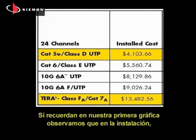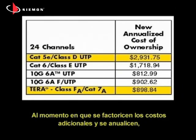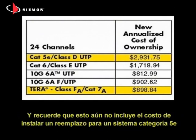If you recall, our first graph showed that at installation, a Category 7A solution would cost about three times more than a Category 5E solution. But by the time you factor in the additional costs and annualize them, that is completely reversed. The Category 5E solution costs three times more than the Category 7A solution. And remember, that doesn't include the cost to install a replacement for the Category 5E system.